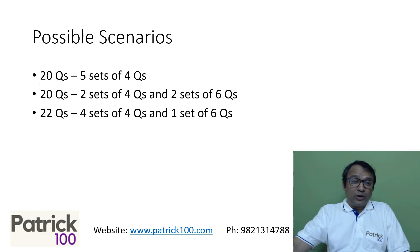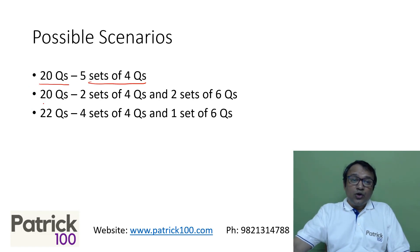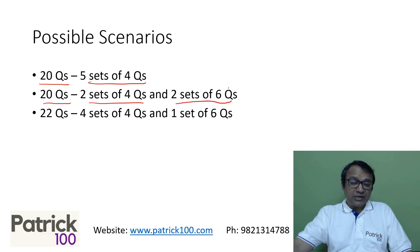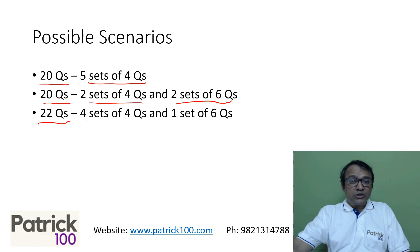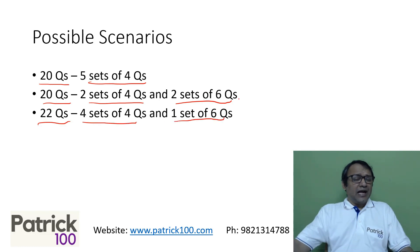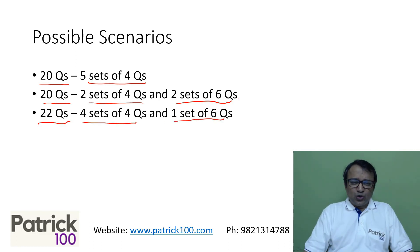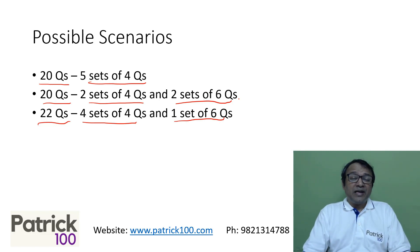You could have 20 questions with five sets of four questions, or 20 questions with two sets of four questions, or two sets of six questions — like last year, where there were two sets of six questions. Or 22 questions with four sets of four questions and one set of six. There could be other changes also — you could have five-question sets — but yes, DILR is unpredictable as far as CAT is concerned.